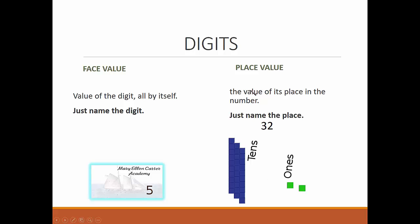And place value, the value of its place in the number. Just name the place. The place value for the three is tens. The two is ones.